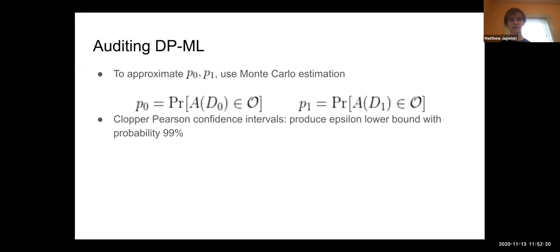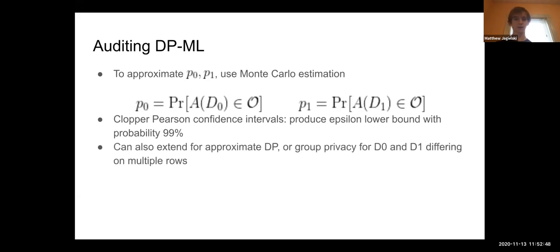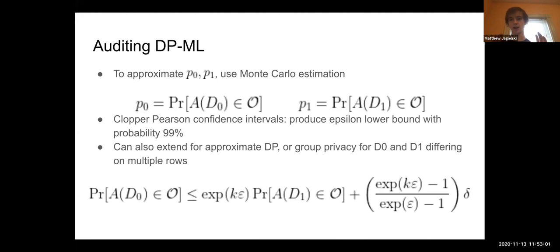The way we go about this is we run 100 trials of A on D0, 100 trials of A on D1, and now we have approximate probabilities. What we'd like is some statement like I have a lower bound on epsilon that I know holds with 99% probability. You can use what are called Clopper-Pearson confidence intervals to provide an upper bound on P0 and a lower bound on P1 that give you that. This basic technique can also be extended for other types of differential privacy or other kinds of D0 and D1, like group privacy or approximate DP. The underlying algorithm—this sampling and confidence interval procedure—is exactly the same, you just do different math to get the epsilon.